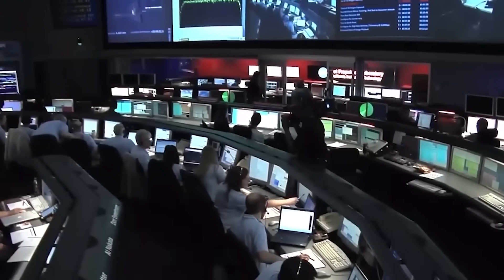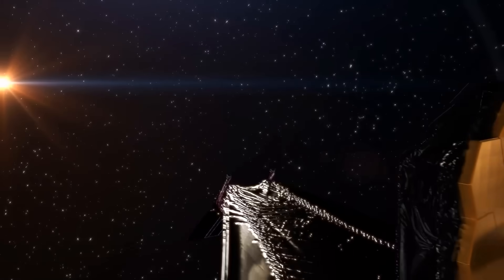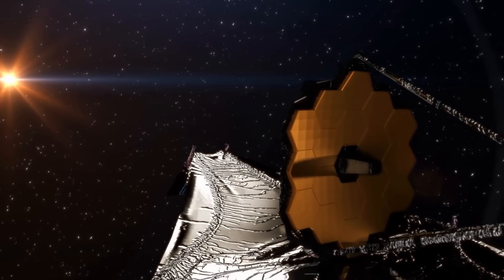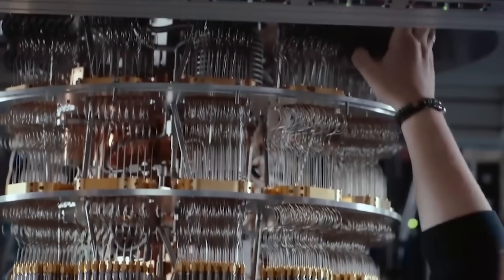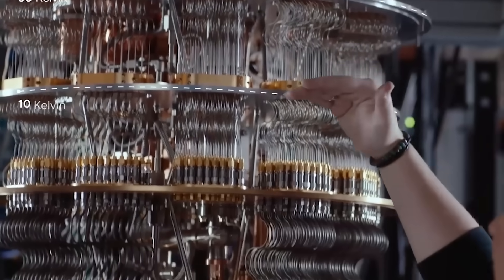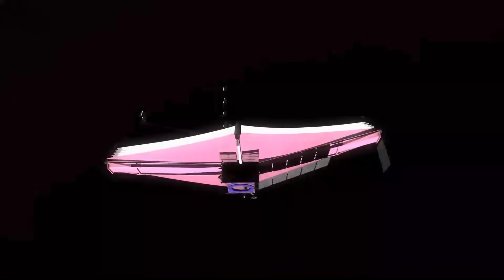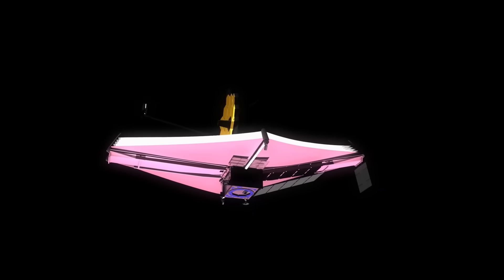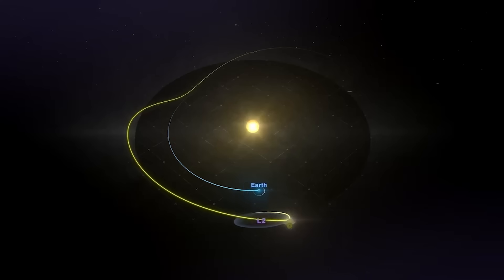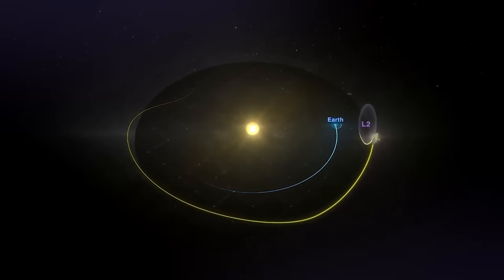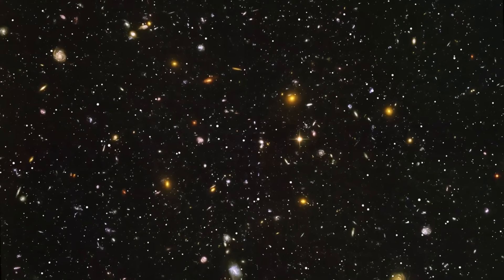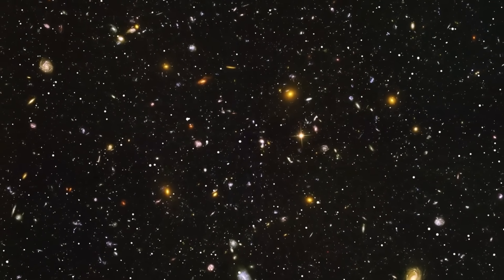This is where the truly revolutionary part of the leak comes in, the convergence of the JWST's unparalleled observational power with the mind-bending capabilities of quantum AI. The James Webb Space Telescope is, to put it mildly, a marvel. Orbiting the second Lagrange point nearly 1 million miles from Earth, it's perfectly positioned to peer back to the dawn of the universe.